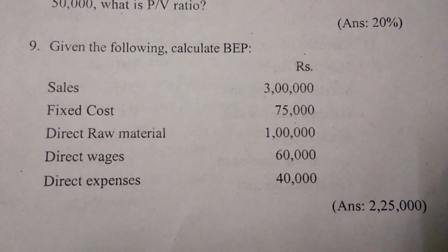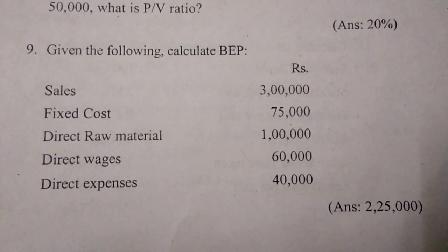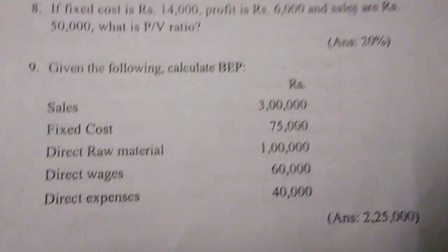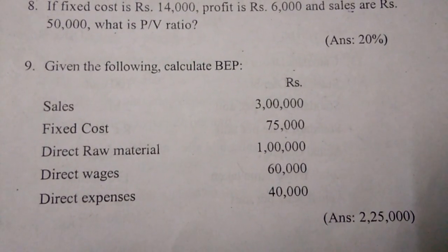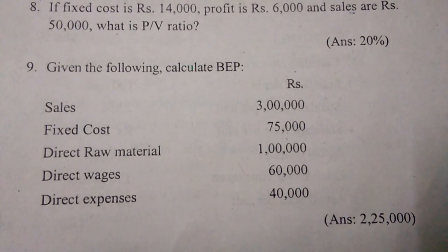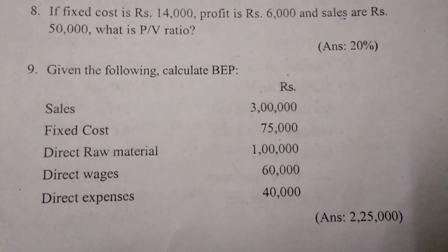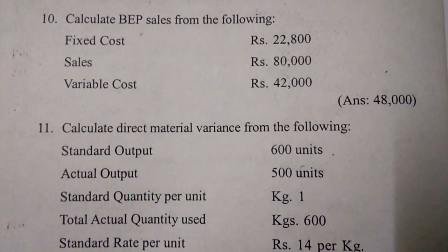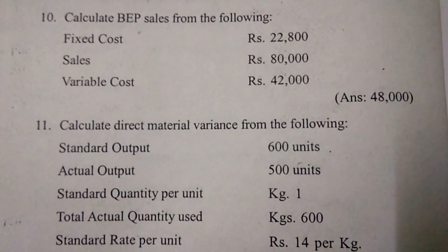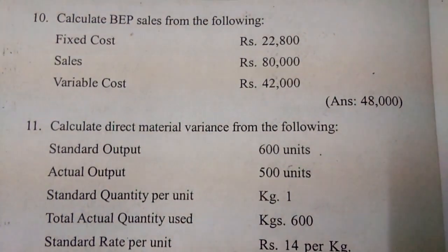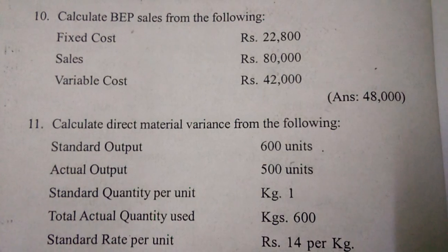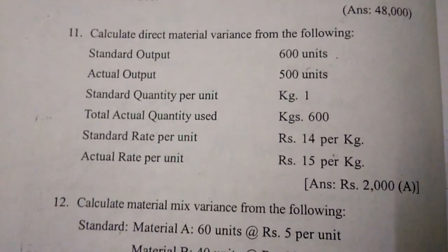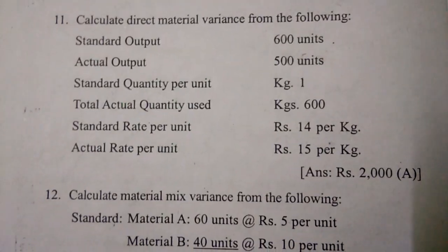Ninth one: calculate BEP — sales three lakhs, fixed cost 75,000, direct raw material one lakh, direct wages 60,000, direct expenses 40,000 — that equals two lakhs twenty-five thousand. Tenth one: calculate BEP sales from the following — fixed cost 22,800, sales 80,000, variable cost 42,000 — that is 48,000.